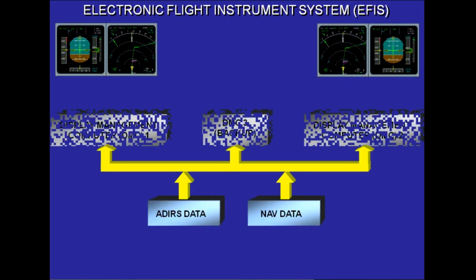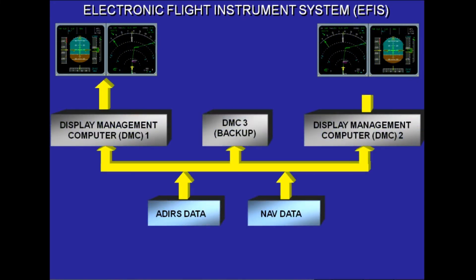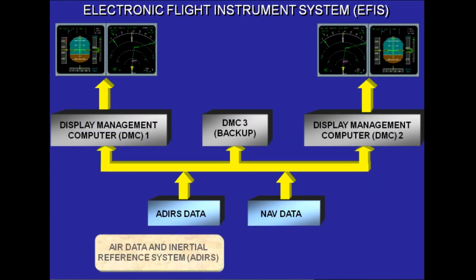For the EFIS displays, data from the air data and inertial reference system, ADIRS, plus navigation data from the flight management and guidance system, FMGS, is fed directly to the DMCs.